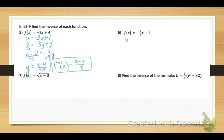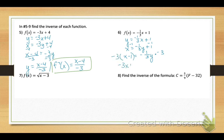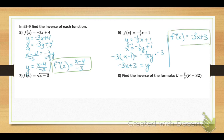Number 6: rewrite with y, then interchange your variables. Solve for y — subtract 1, then multiply by negative 3 to clear the fraction. Distribute that negative 3 and get the inverse function equaling negative 3x plus 3.